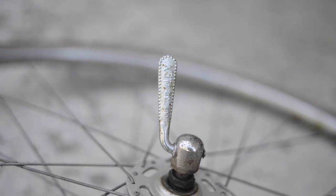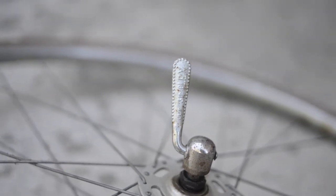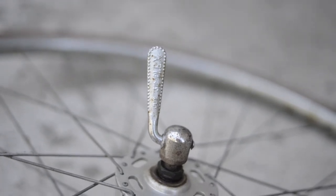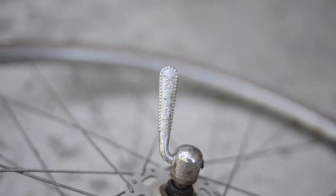So here we are, we have our first Simplex part, which is our quick releases. It's the same on both wheels. I'm going to see if maybe I can save those quick releases and put them on the new wheels, but we'll see what we can do.